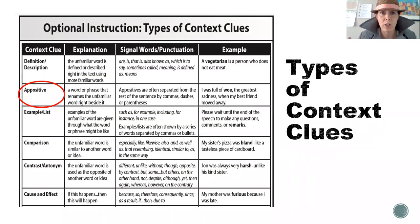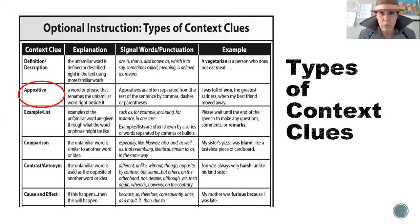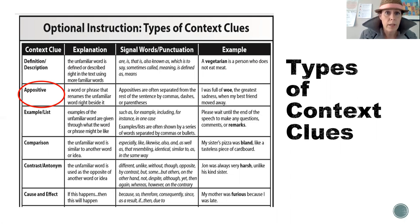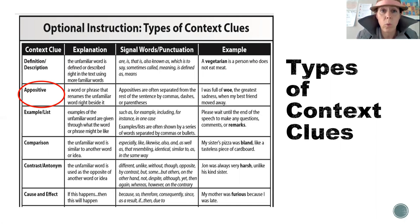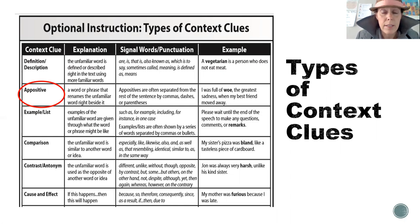So what is a context clue? A context clue is when we're reading and we might not know what it is that we're reading. Maybe there's a word or a sentence or even a paragraph we might not understand completely. If we look for context clues, then sometimes we can figure out what it means.